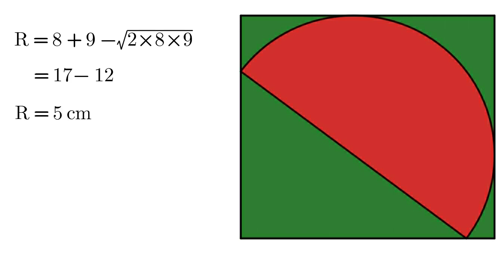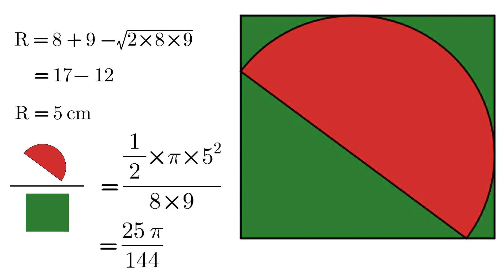R equals 5 centimeters. So the area of the semicircle divided by the area of the rectangle equals (1/2 times π times 5²) divided by (8 times 9), which equals 25π/144, or approximately 0.5454.